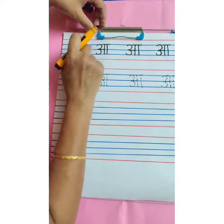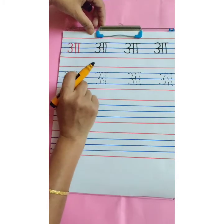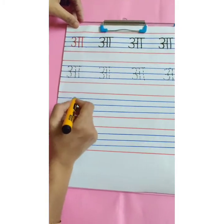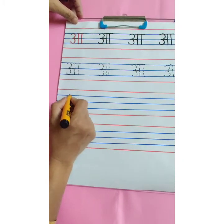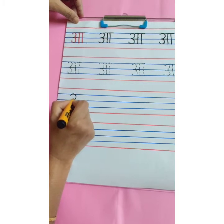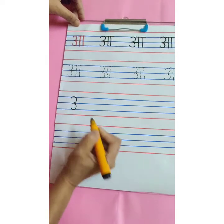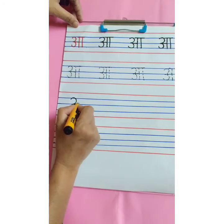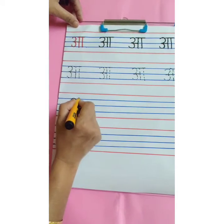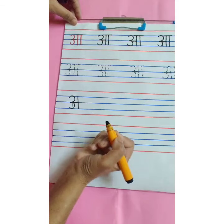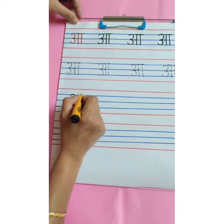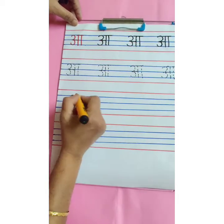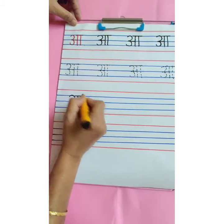This way you are going to complete your first two rows, and then the remaining page you are going to write independently like this. Start with the first blue line, write number 3 like this, then small sleeping line like this, then standing line like this and one more standing line like this and then overhead small sleeping line — A.